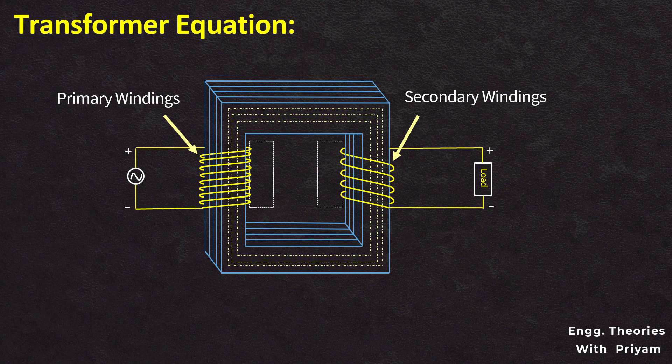Flux generated in the primary winding gets linked with the secondary winding, and the flux which is not linked to the secondary winding is called leakage flux. When the primary winding is connected to a source of sinusoidal alternating voltage — input voltage to the primary winding is V1, which is sinusoidal in nature — then sinusoidal alternating flux is generated in the magnetic core, which links both primary and secondary winding.